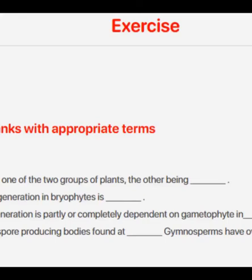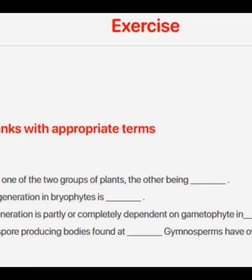Number three — sporophytic generation is partly or completely dependent on gametophyte in bryophyte plants. Number four — adiantum has a spore-producing body found at wild areas. Number five — gymnosperms have naked ovules.